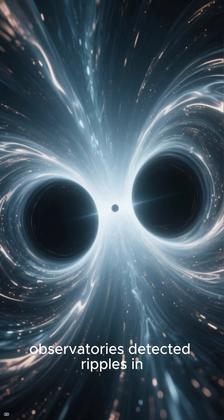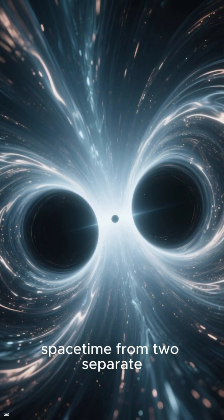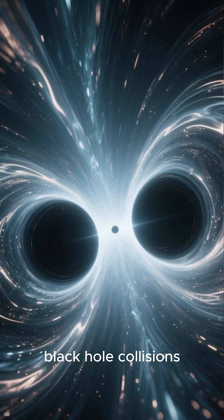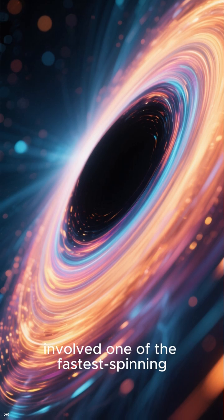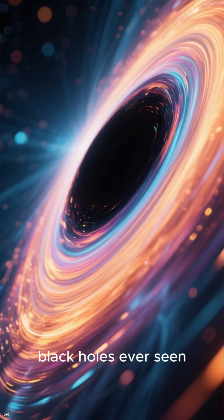The LIGO-Virgo-Kagra observatories detected ripples in space-time from two separate black hole collisions. One event, called GW241-Zoho-1-1, involved one of the fastest spinning black holes ever seen.